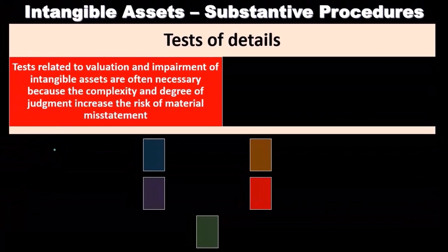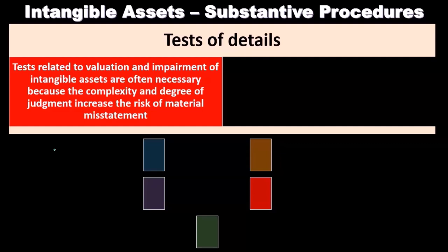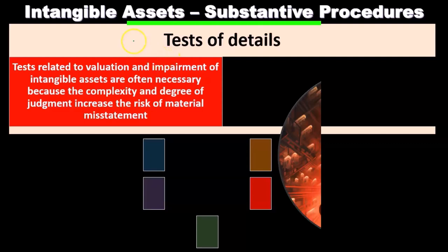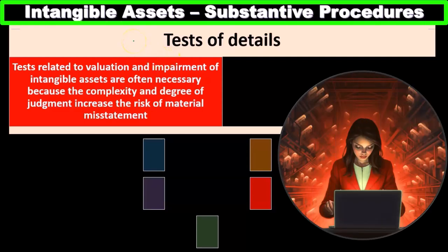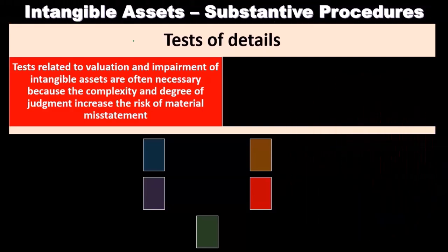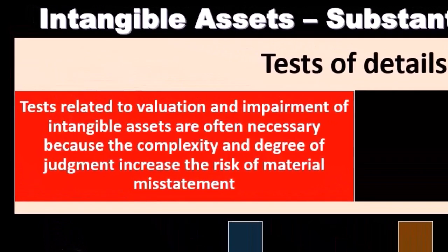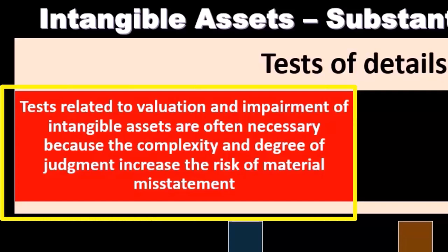Now we've considered the inherent risk and the control risk related to intangible assets. Now we're going to consider the substantive procedures — the same kind of process: we have the inherent risk, we've got the control risk, and then we consider the detection risk in relation to the substantive testing. Tests related to valuation and impairment of intangible assets are often necessary because of the complexity and degree of judgment, which increases the risk of material misstatement.